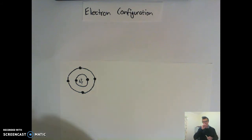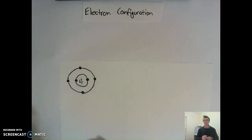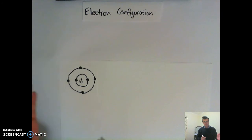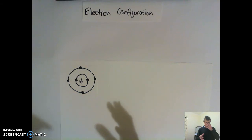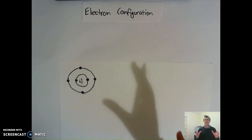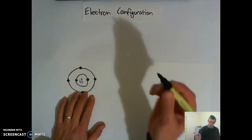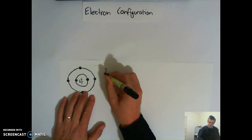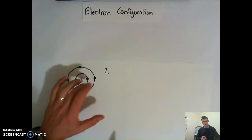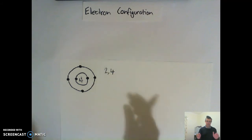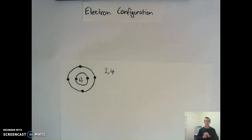All I'm going to do is count the amount of electrons there are in each shell and then write that down — that's essentially all electron configuration is. If I look at the first shell, we can see that there's only two electrons. All of your electron configurations, the first number will always be 2, except for hydrogen obviously. So for carbon I put a 2, then a comma, then I count how many electrons are in the next shell: 1, 2, 3, 4. So the electron configuration for carbon is 2, 4.